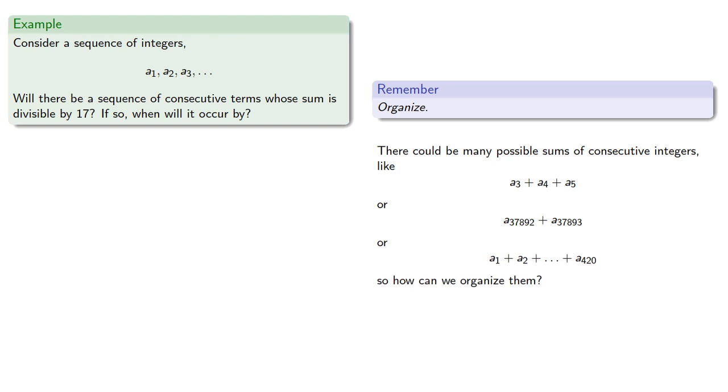One possibility is just to consider the partial sums. S1 is the sum of the first term, S2 is the sum of the first two terms, S3 is the sum of the first three terms, and so on.